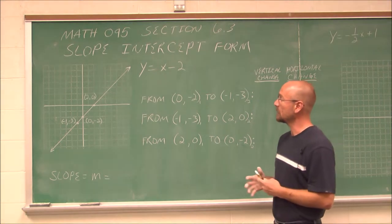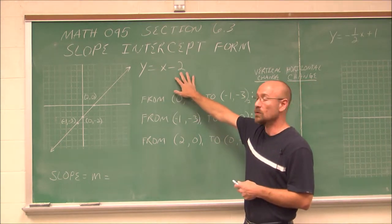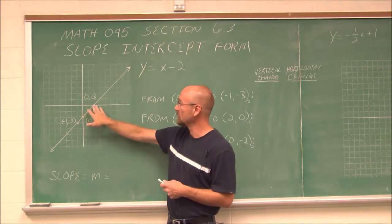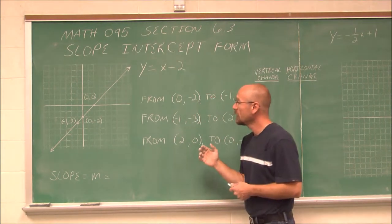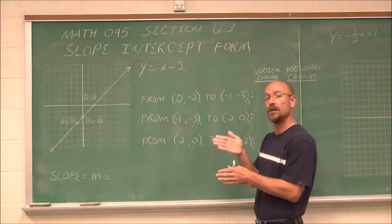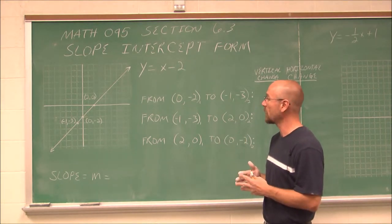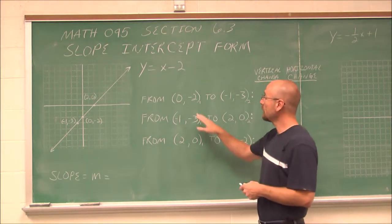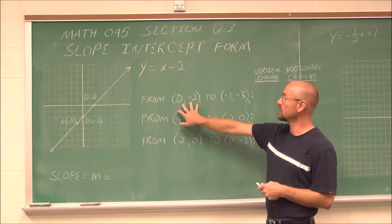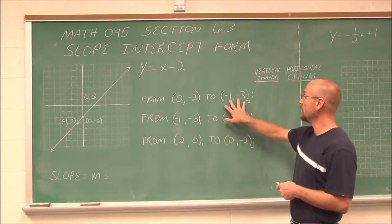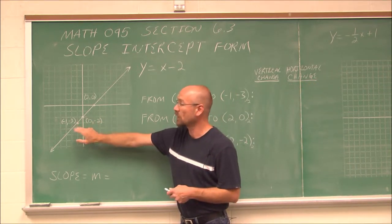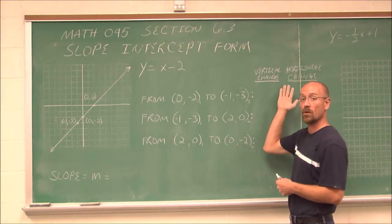The first thing we're going to look at is the equation y equals x minus 2. We have it graphed here, and three of the points are plotted and written as ordered pairs. What we want to consider is: what if we want to go from one ordered pair to another ordered pair? Regardless of what that ordered pair is, we want to see a pattern.